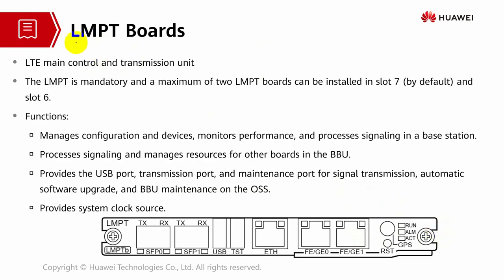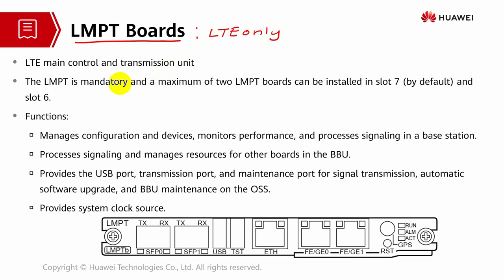Next, let's go through the LMPT board. The key difference between UMPT and LMPT is that LMPT can only support one type of technology — LTE. It is not universal and is meant solely for LTE solutions. It is also a main control transmission unit, making it more suitable for a single-mode base station. LMPT is mandatory, and you can install a maximum of two LMPT boards: slot 7 by default and slot 6 as a backup.